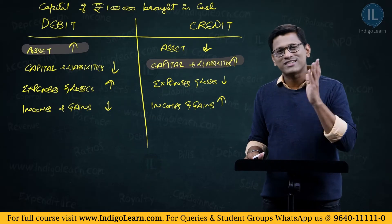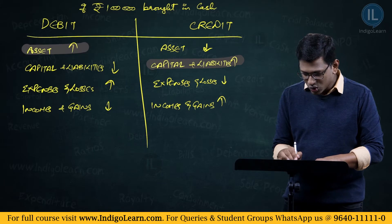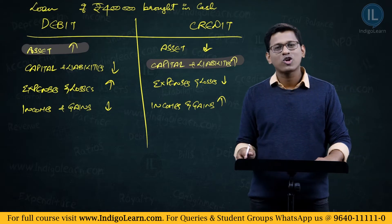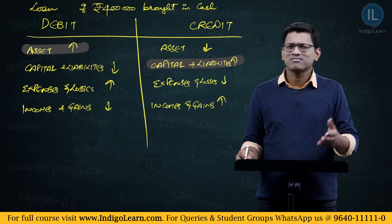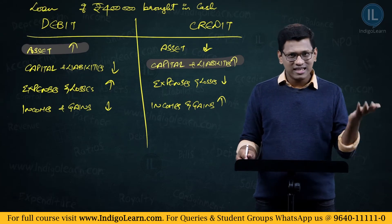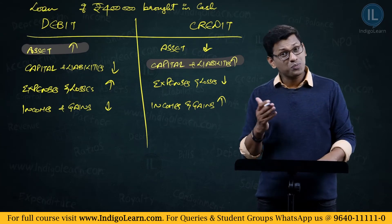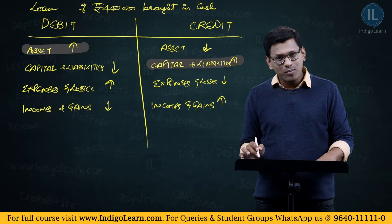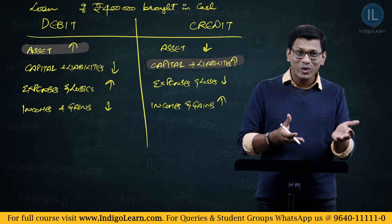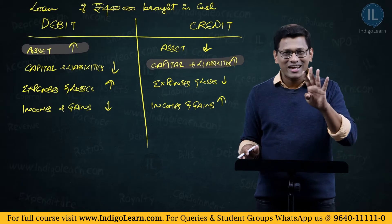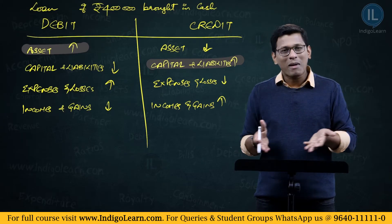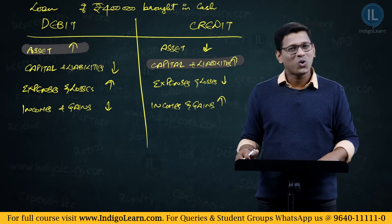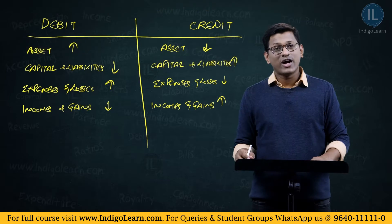Let us slightly change this: a loan of rupees 4 lakhs brought in cash. What will happen? Asset — cash — is increasing by 4 lakhs. And correspondingly, loan which is a liability is increasing by 4 lakhs. So the same match applies: asset increasing on debit side, capital and liability increasing on credit side.